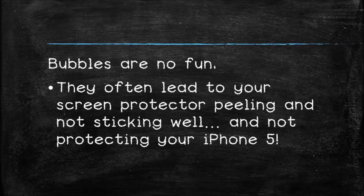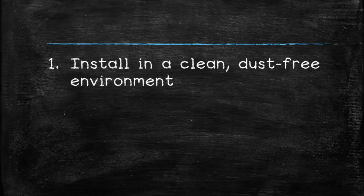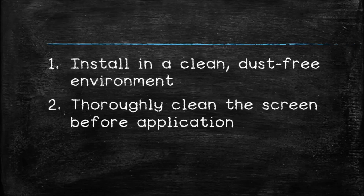So to avoid getting these bubbles on your glass, here's the process to follow. First of all, make sure you are installing the screen protector in a clean, dust-free as possible environment. Thoroughly clean the phone's glass with a microfiber cloth to ensure no lint or dust particles are left on the screen. Oftentimes I'll even blow on the screen after I'm done cleaning it with a cloth just to ensure nothing's left.